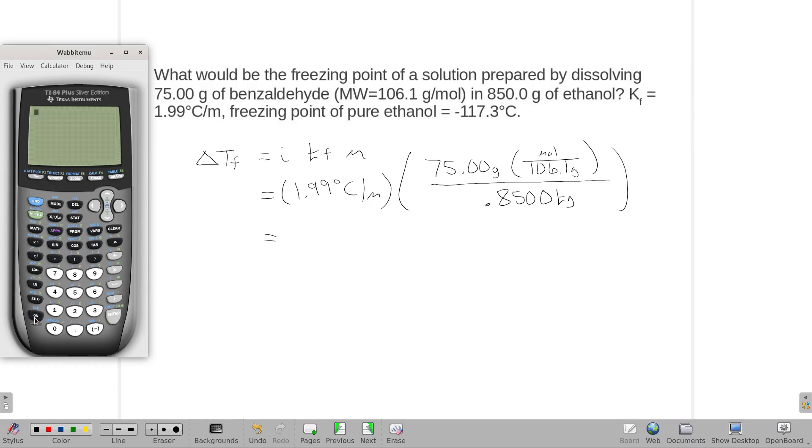So what does that actually look like? 1.99 times 75 divided by 106.1 and also divided by 0.85 gives us a delta Tf of 1.66.